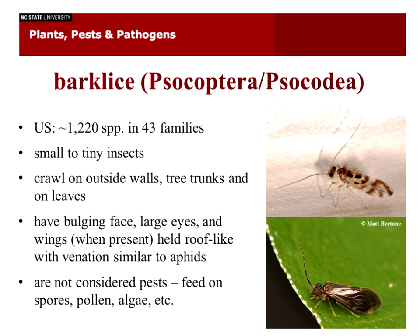Bark lice are commonly sent in and we get pictures of them a lot, but they're not considered pests. They feed on spores, pollen, algae, and lichens. In fact, recently in the clinic, Chuck Hodges watched a bark louse eating fungal spores and found only spores in its frass — they're basically grazers, like lawn mowers of the surface of things. These ones are commonly seen on camellias, found underneath the leaves. The adults have wings, and the nymphs stick together under a silk covering. A lot of the silk you find on plants can actually be attributed to bark lice — it's similar to spider mite silk but finer and less dense.